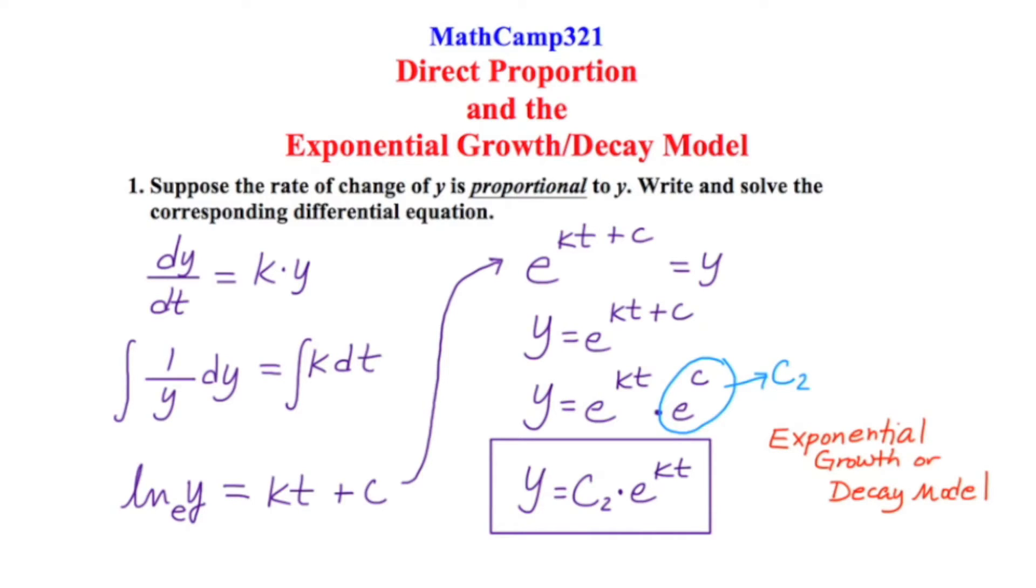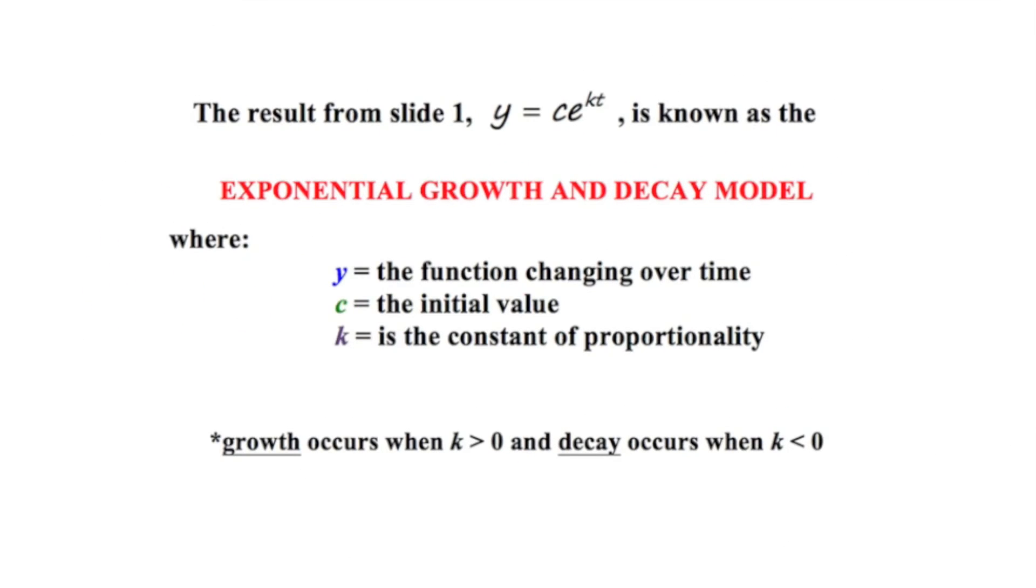Let's go to the next slide where we'll talk a little bit more about this growth decay model. The result from slide one, y equals c times e^(kt), is known as the exponential growth and decay model where y is the function that's changing over time. Usually this function is going to describe some real world application. C is going to be the initial value. This means what is the value when time is equal to zero?